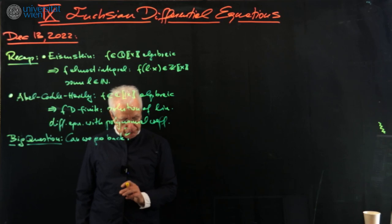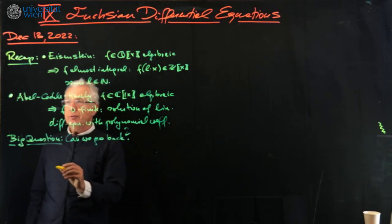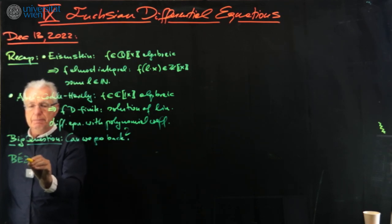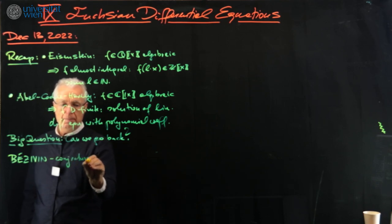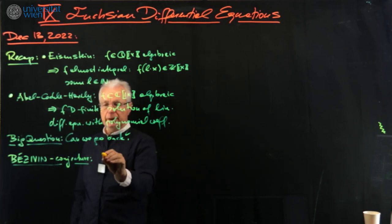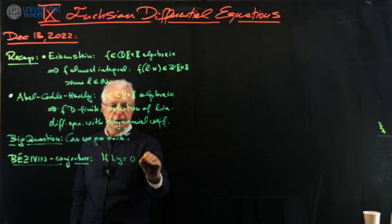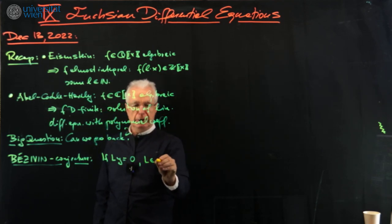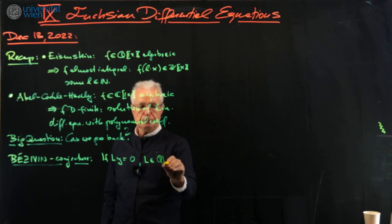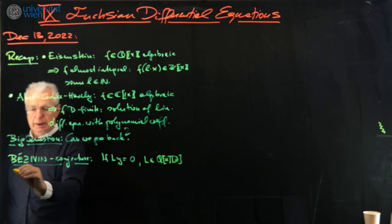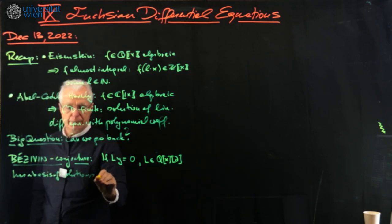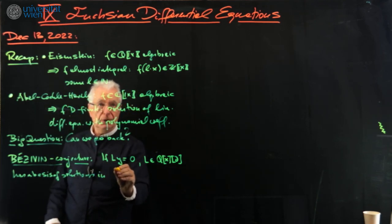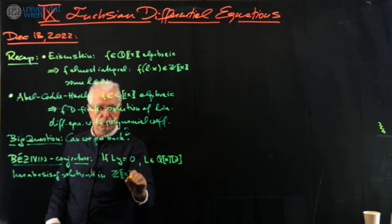I will make this precise in the case of order one equations at least. Before we go to the p-curvature conjecture itself, let me mention again the conjecture of Bézivin. The Bézivin conjecture, which in some sense is more aesthetic than the Grothendieck conjecture.